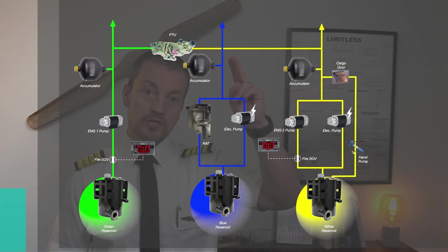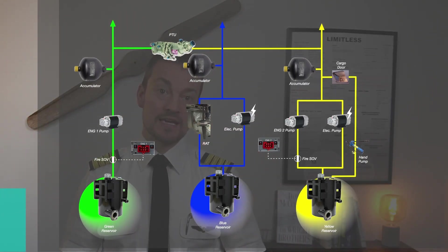Up here the blue line does not connect to the yellow line. The PTU is a power transfer unit that uses fluid from either side but mechanically in the middle are only connected via a shaft.